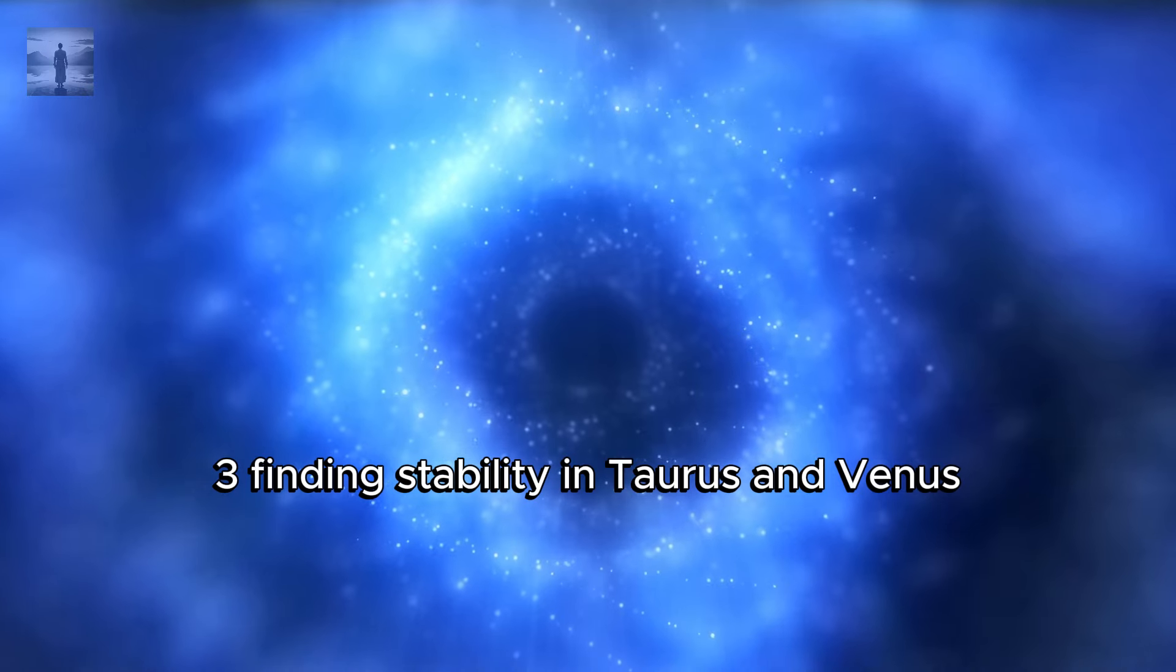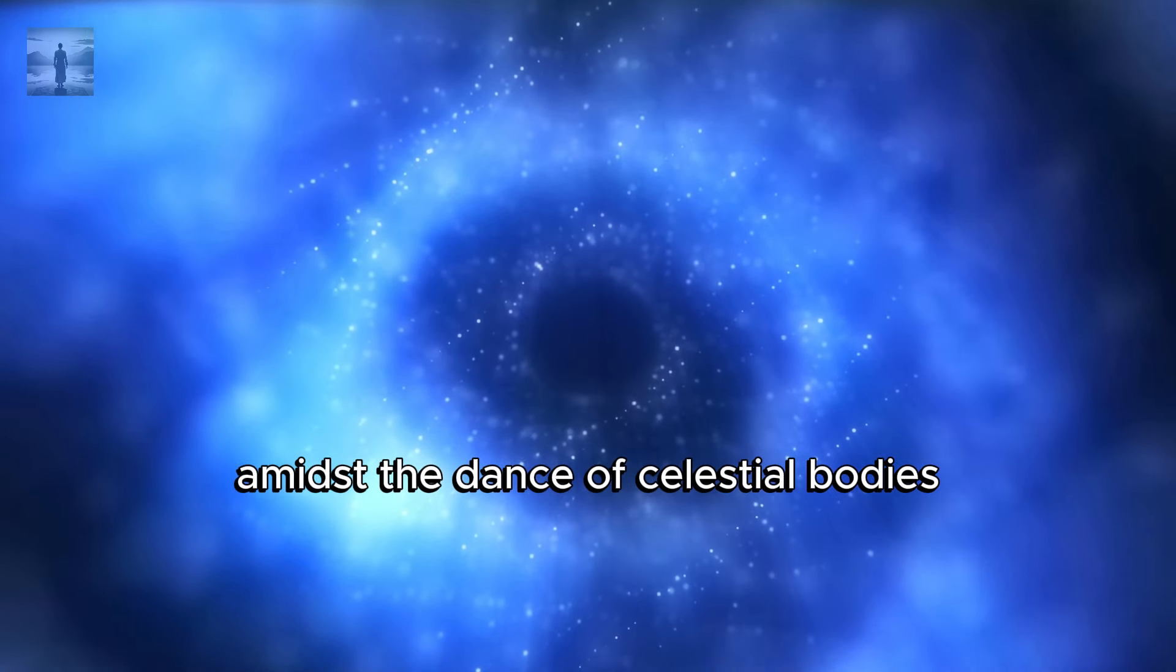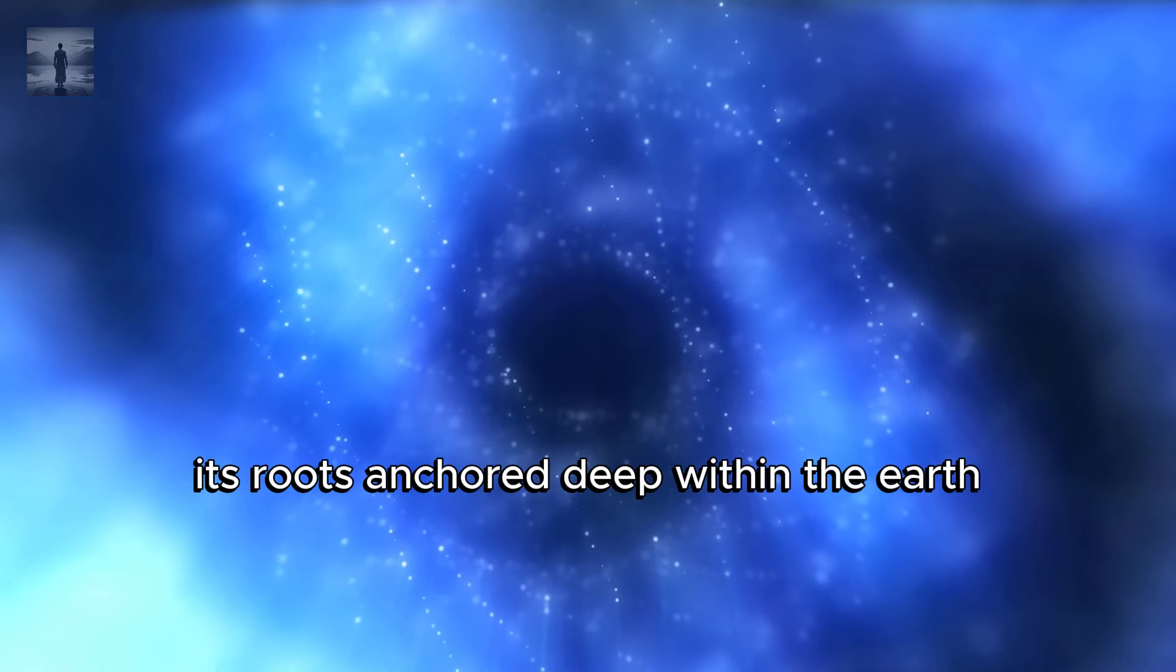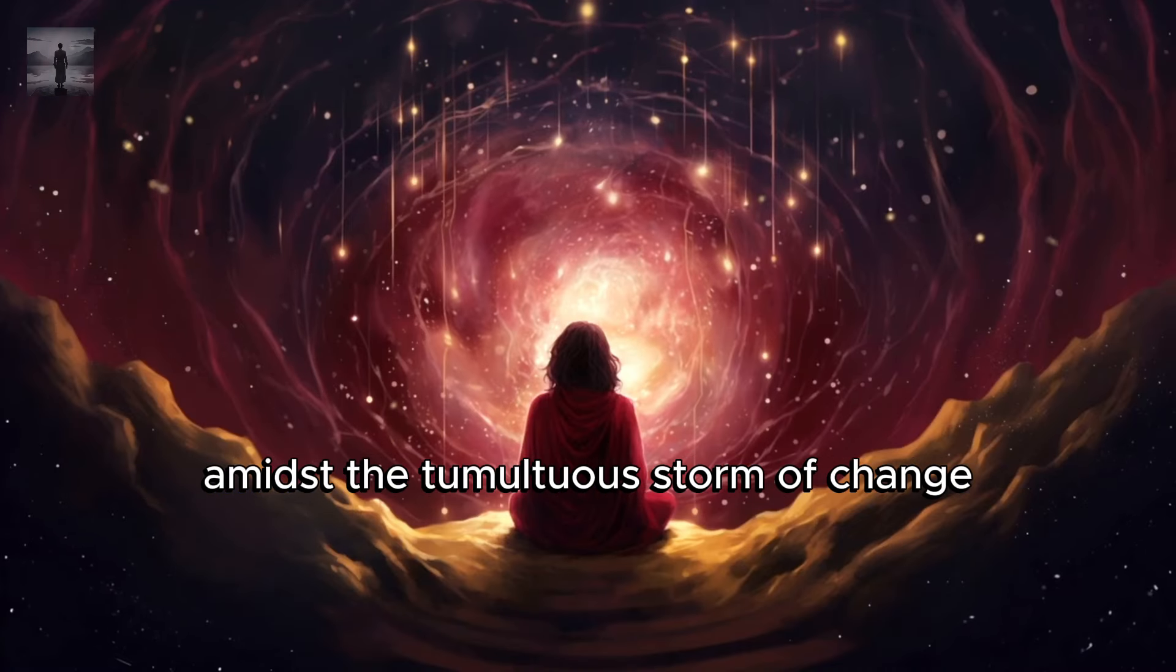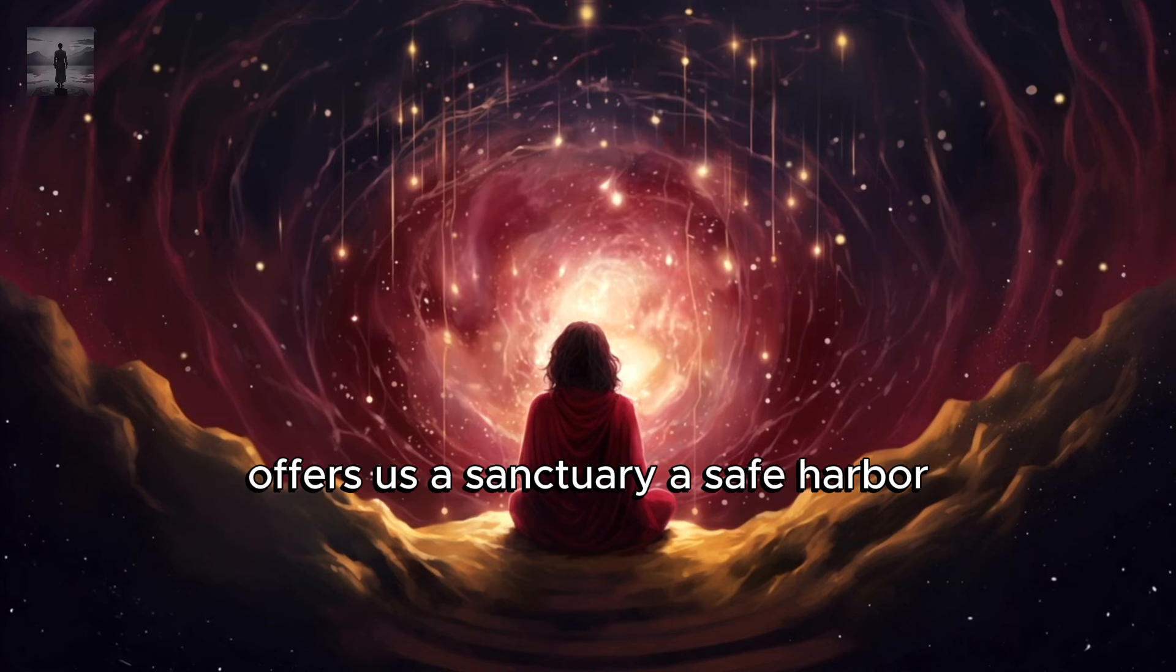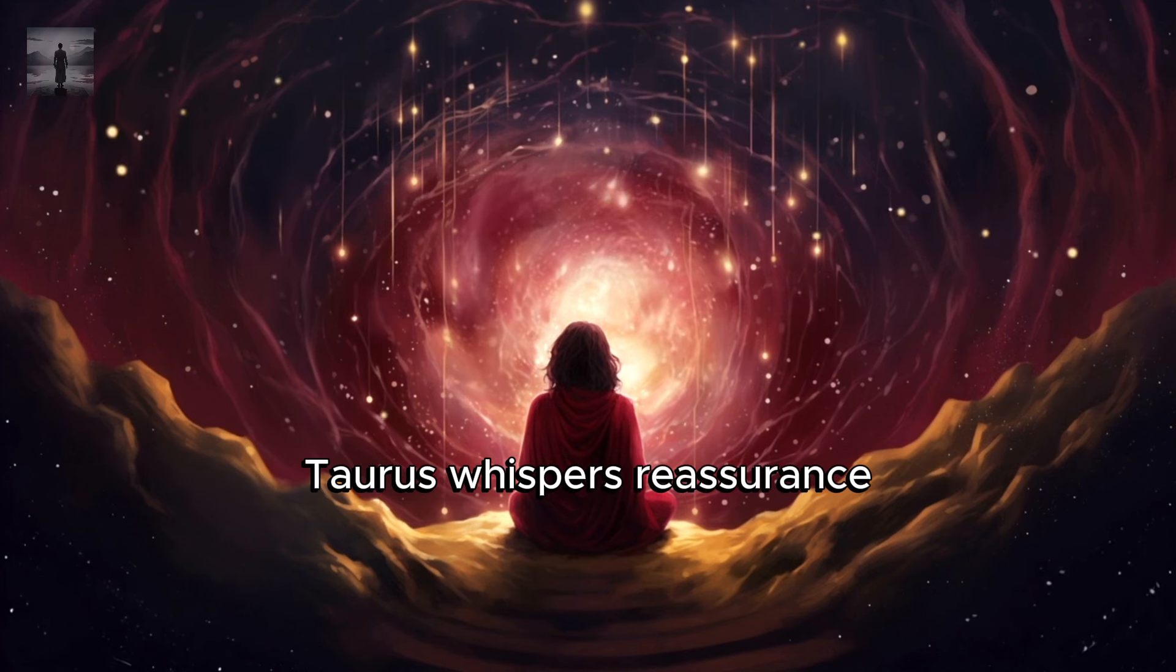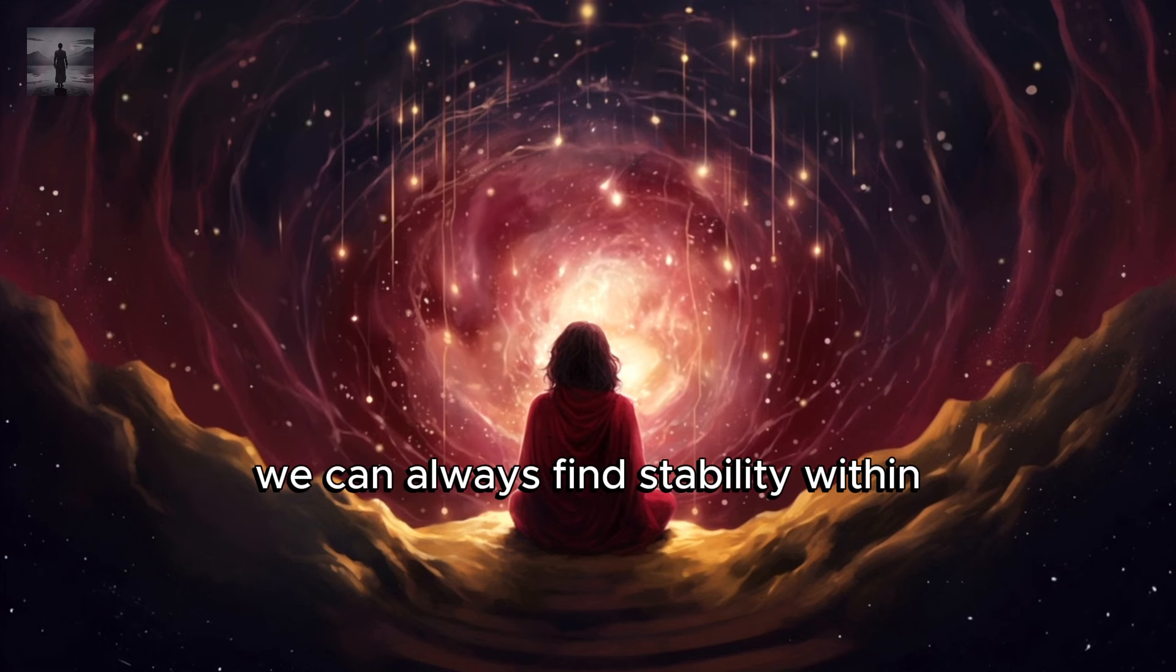Finding Stability in Taurus and Venus. In the midst of the swirling cosmic energies, amidst the dance of celestial bodies, Taurus and Venus emerge as steadfast beacons of stability and beauty. Picture Taurus as the sturdy oak tree, its roots anchored deep within the earth, providing a sense of grounding and resilience amidst the tumultuous storm of change. Taurus, ruled by the steady hand of Venus, offers us a sanctuary, a safe harbor, where we can find solace and peace amidst the chaos. Like the gentle embrace of a loved one, Taurus whispers reassurance, reminding us that no matter how turbulent the outer world may seem, we can always find stability within.